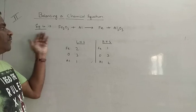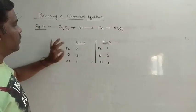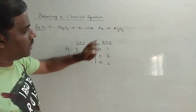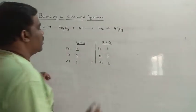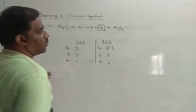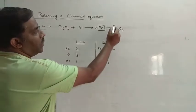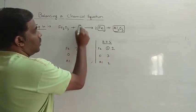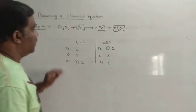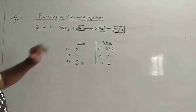Now let us see example 4. Here Fe2O3 plus Al gives Fe plus Al2O3. The number of irons are 2, aluminiums 1, oxygens 3 on the left. On the right, irons are 1, oxygens are 3, aluminiums are 2. First let us balance the irons — there is only 1 iron on the right, so we put a 2 in front of Fe, and the irons are balanced. Now let us balance aluminium — there are 2 aluminiums on the right but only 1 on the left, so we multiply Al by 2. We get 2 aluminiums. The number of oxygens are 3 on both sides, so the equation is now balanced.